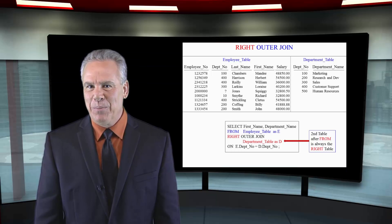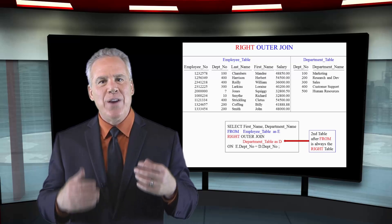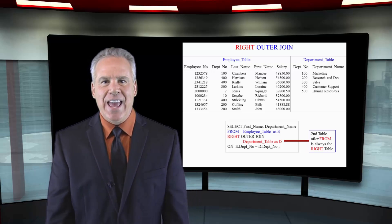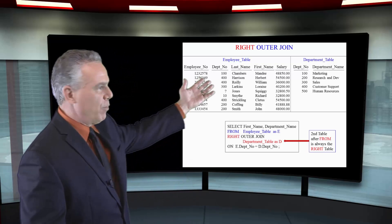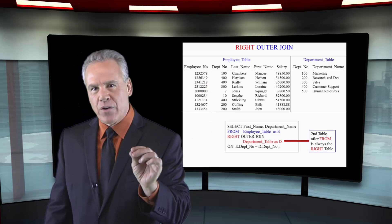Now we've changed it up a little bit. We're going to do a right outer join. As you can see here from the employee table and the department table, we're doing a right outer join.